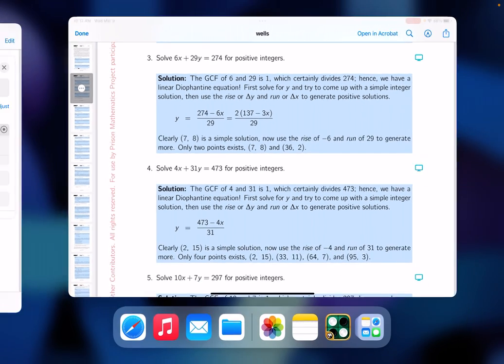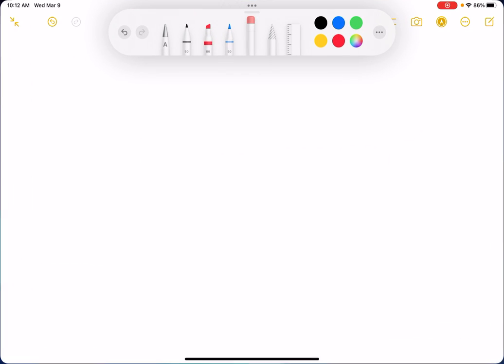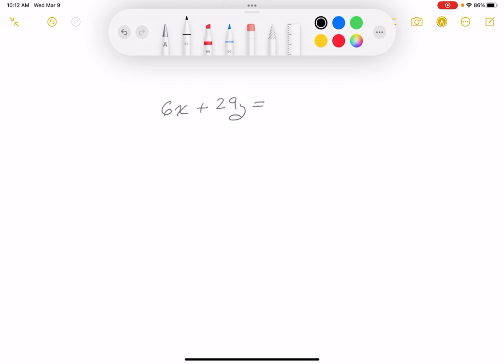So I'm going to go to the whiteboard and write the problem down. 6x plus 29y equals 274. What I'm going to do is look for the GCF between 6 and 29. Well, lo and behold, that's 1, and 1 divides 274, so we're good to go.